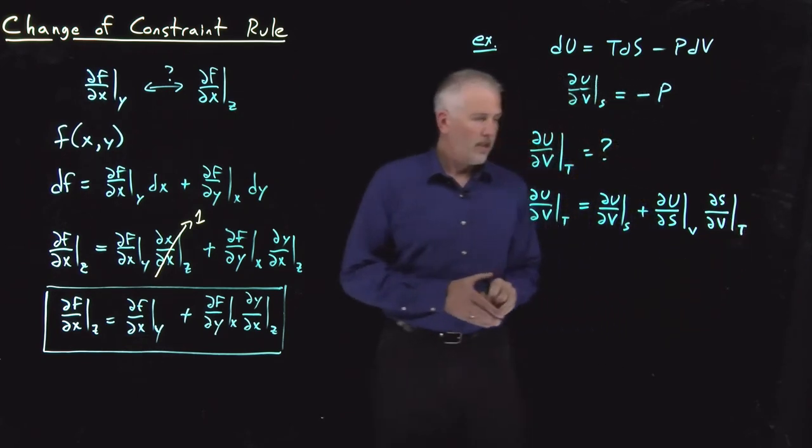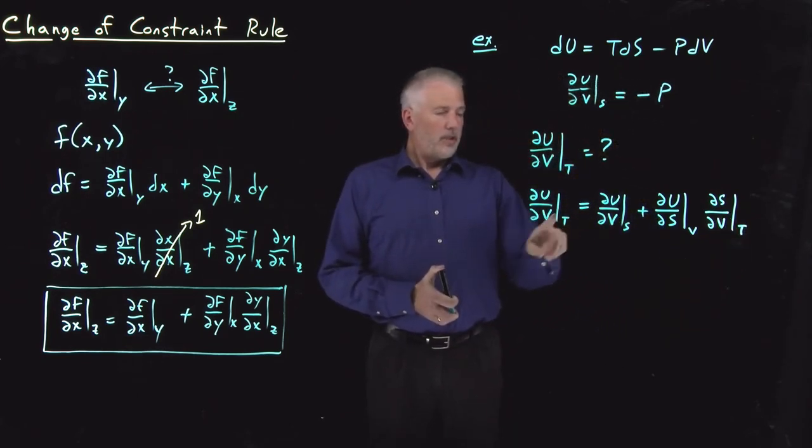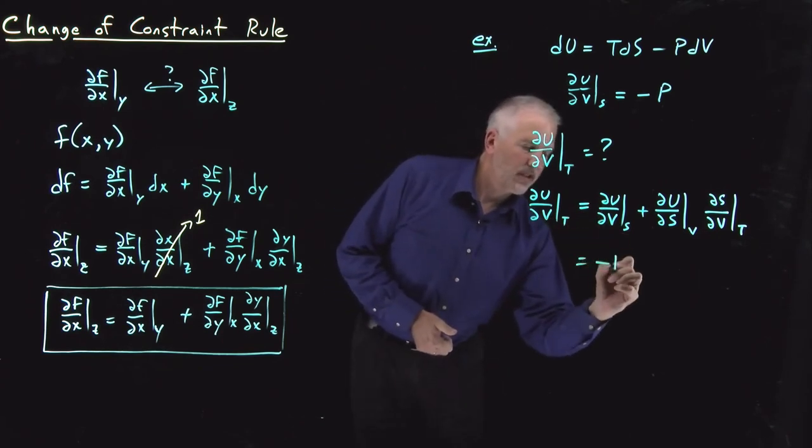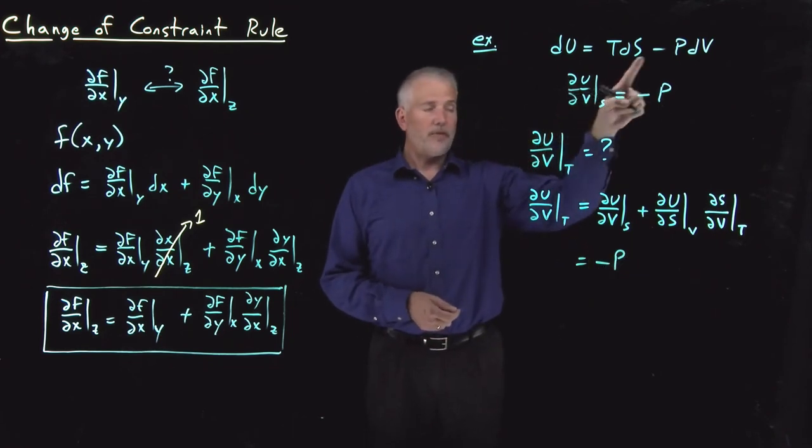All right, so far so good. ∂u/∂V at constant T is equal to the one we know, ∂u/∂V at constant S. That's negative pressure, we know that from the fundamental equation.